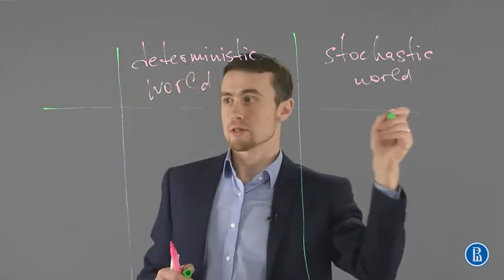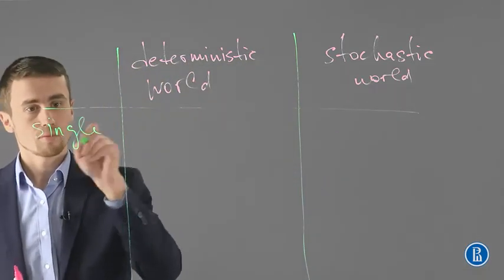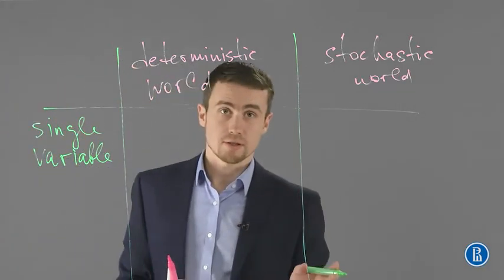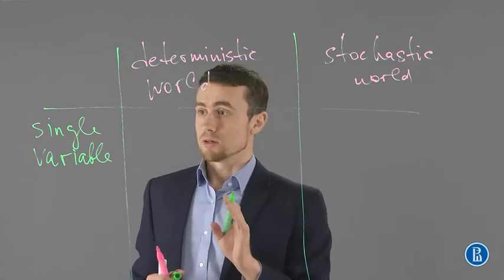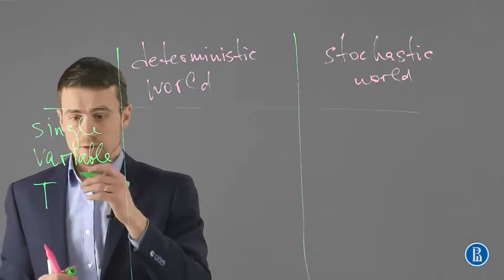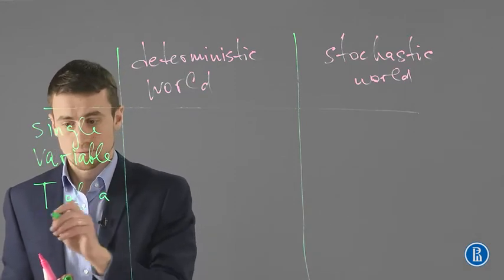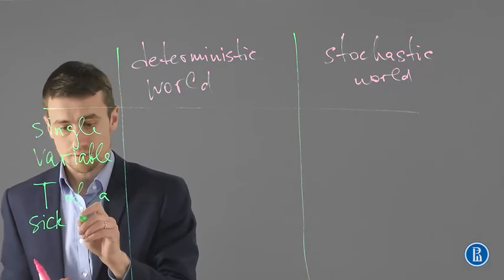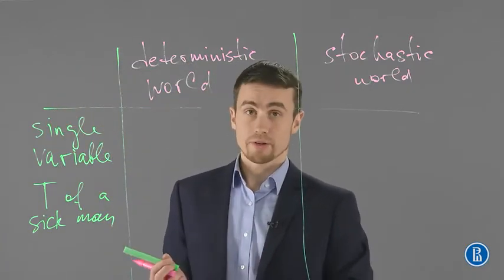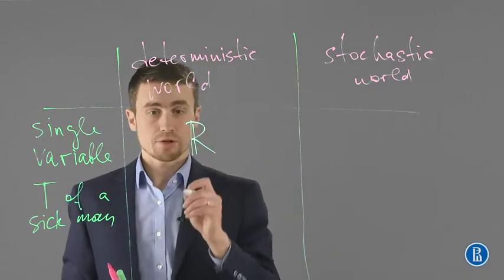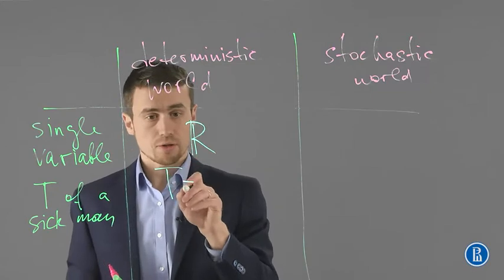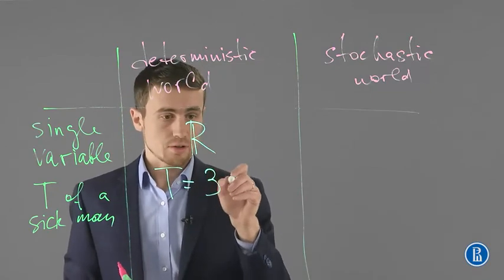Let me start with single variables. For instance, one can analyze the course of a disease. As a single variable, you can consider the temperature of a sick man on the first day of illness. In the deterministic world, this is just a real number. For instance, you can measure the temperature of a given individual and find that the temperature on the first day is 39 degrees.